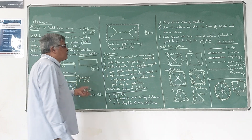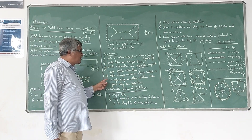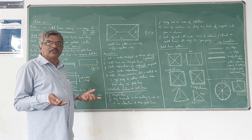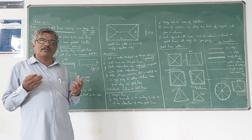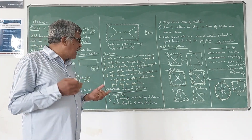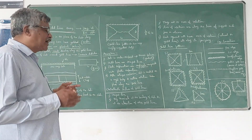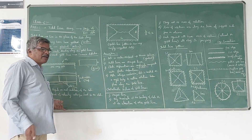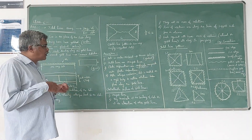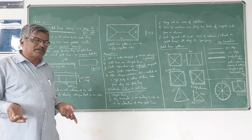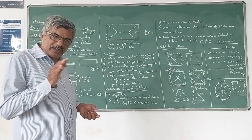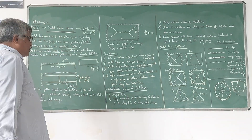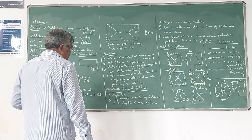After the collapse mechanism, after the development of yield lines, the entire slab is treated as a rigid body and the entire rotation takes place along the yield lines, leading to the failure of the slab.